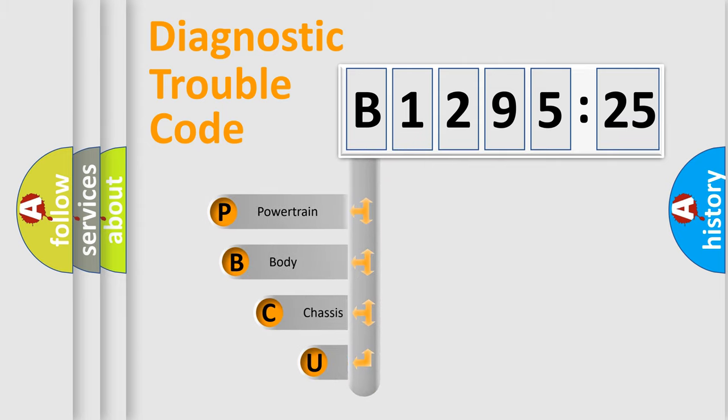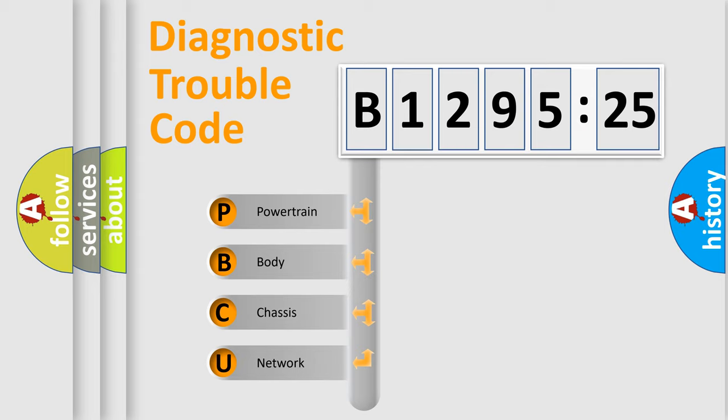Powertrain, Body, Chassis, Network. This distribution is defined in the first character code.